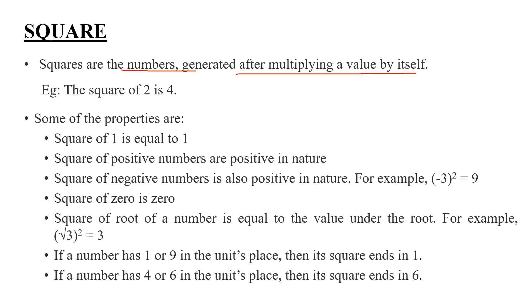We are going to do 2 squared and the number of square. 1 squared is 1. This is a positive number. This is a negative number.